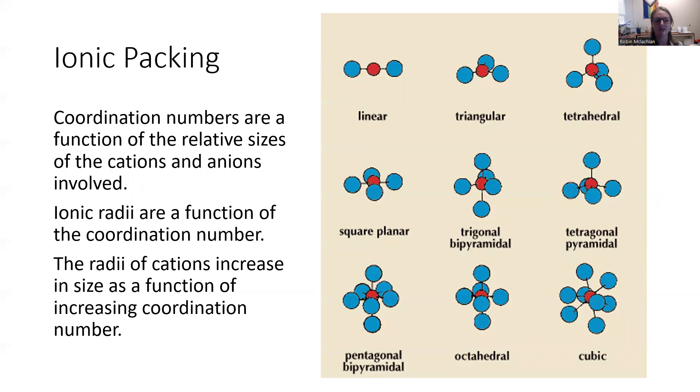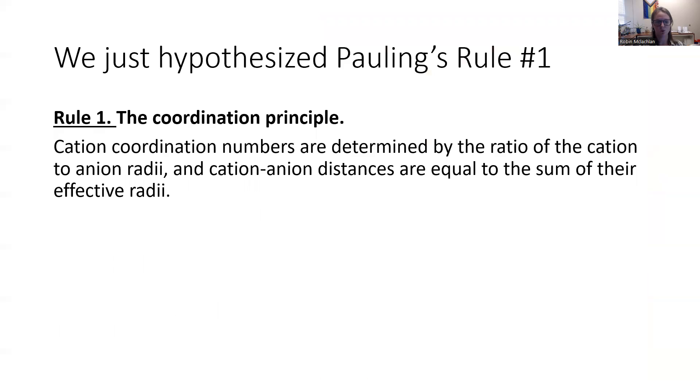And this allows for a lot of different coordination shapes. You can have linear, triangular, all the way up to cubic. And this brings us to rule one.